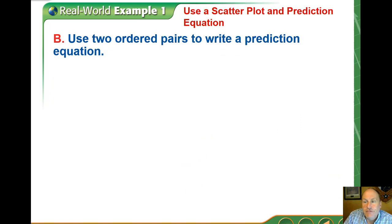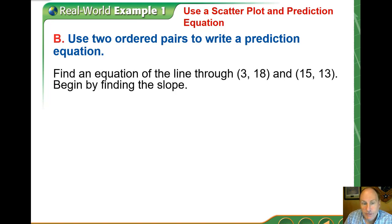Given that line of best fit, let's take two of the points, the ordered pairs that are on that line, and use them to write a prediction equation or create a model for this. The two points that were right on the line that we drew were 3 comma 18 and 15 comma 13.